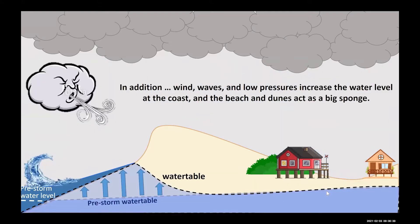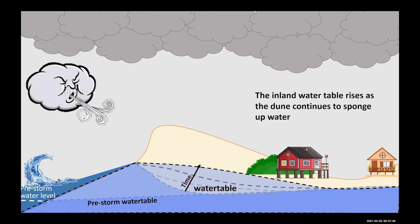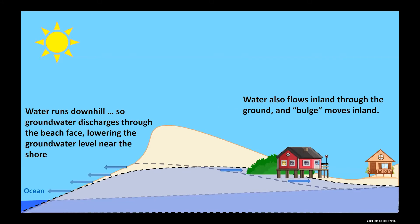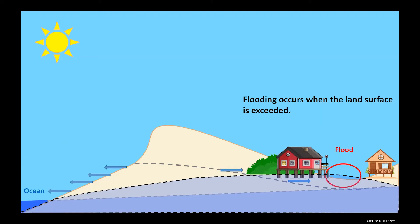In addition to big rain events, we see flooding associated with big changes in the shoreline water level, driven by wind waves and low pressure. They increase the water in the ocean and the groundwater table right at the shoreline increases in response. The dune acts like a big sponge, sucking up water from the ocean and transmitting it inland. After a storm recedes, the water table remains elevated and this high groundwater continues to propagate inland as it also discharges back to the ocean, causing flooding when the water table exceeds the land surface.